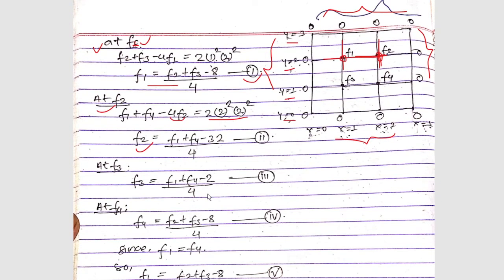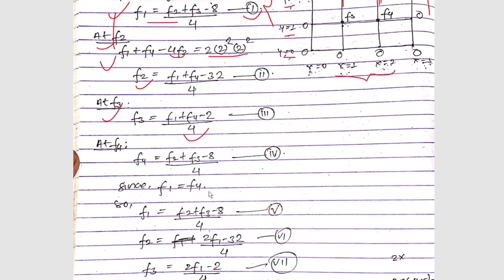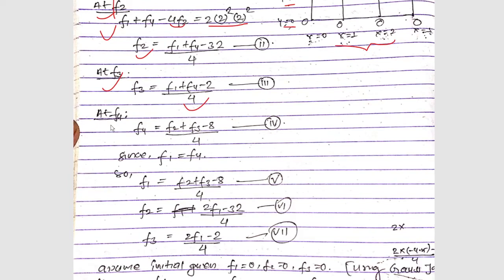Similarly, solving for f3 using the same procedure gives equation 3: f3 = (f1 + f4 − 2) / 4. And solving for f4 gives equation 4: f4 = (f2 + f3 − 8) / 4.